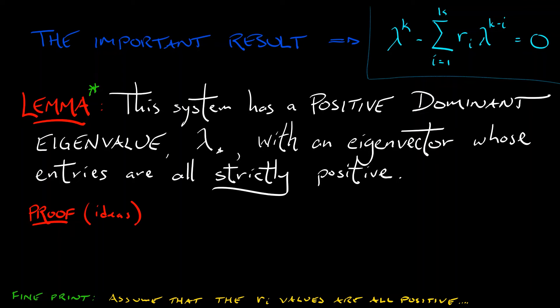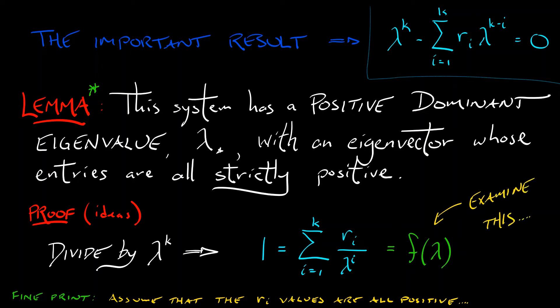So what we're gonna do is we're gonna take that characteristic polynomial, divide by lambda to the K, and we get the following equation. 1 equals the sum i goes from 1 to K of R sub i, divided by lambda to the i. Now this is a special type of equation. This is sometimes called an Euler-Lotka equation.